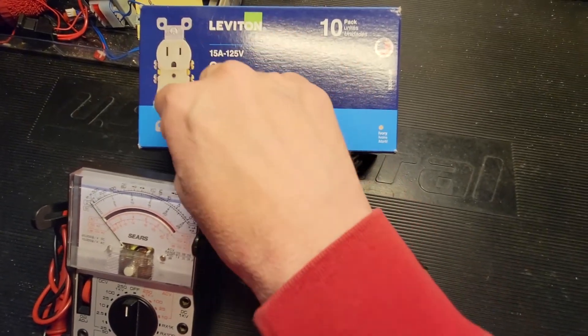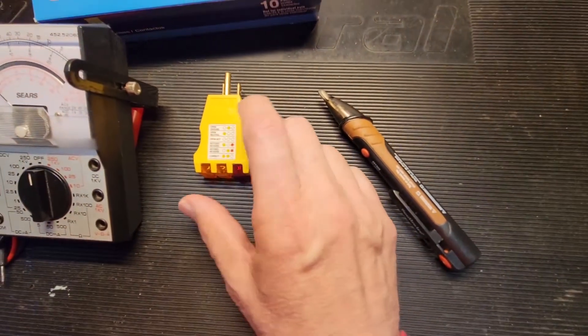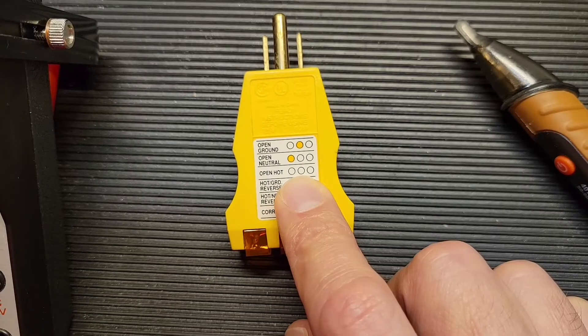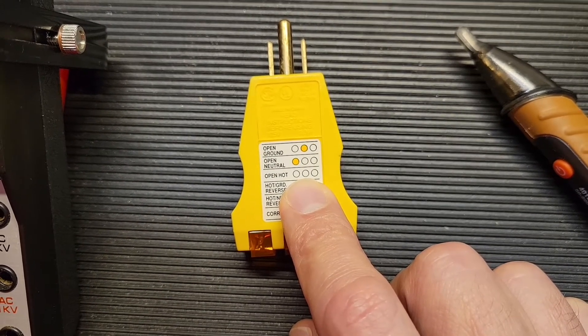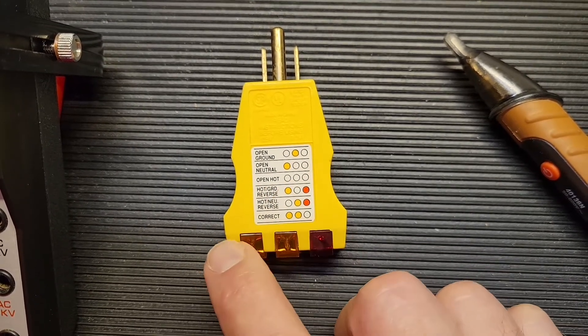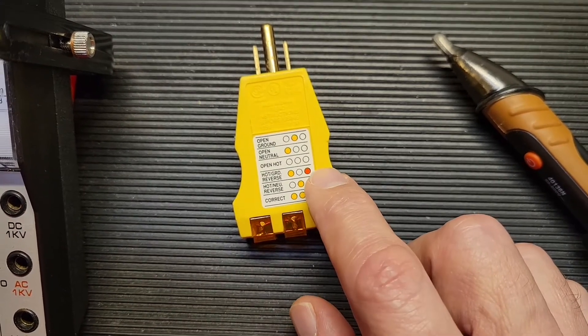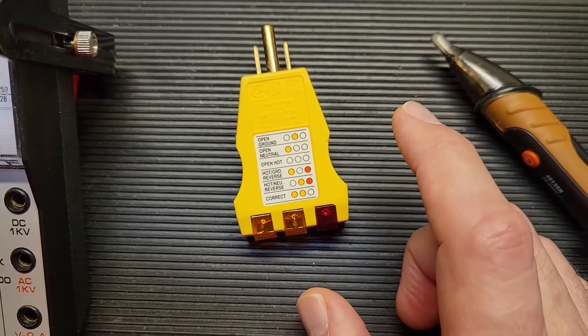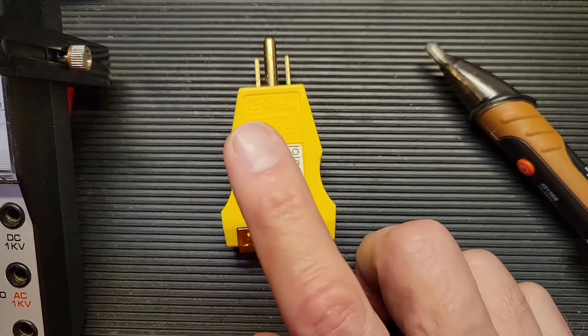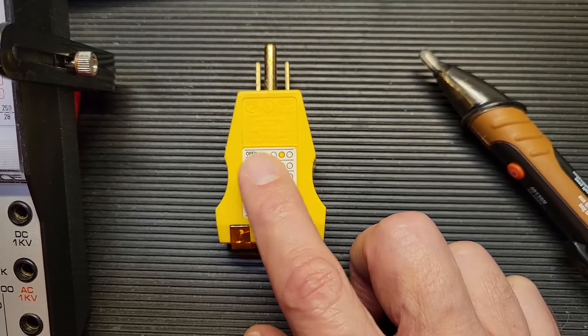The socket tester, while a great diagnostic tool because it can tell you whether there's a reversed hot neutral, has the problem that an open hot is indicated by no lights, which is the same indication that you would get if the power was off to that plug. So you don't know for sure if you're looking at an open hot or no power. I want to be 100% certain that there is no voltage going into that plug when I'm working on it.